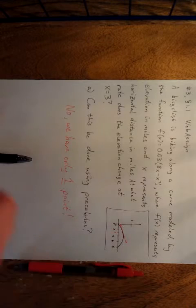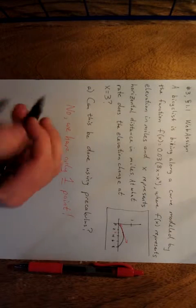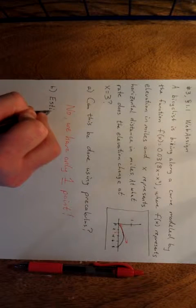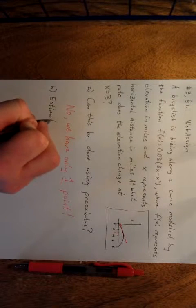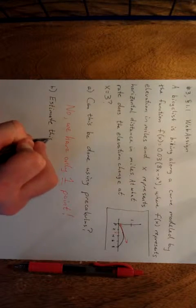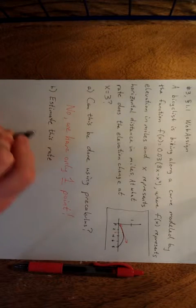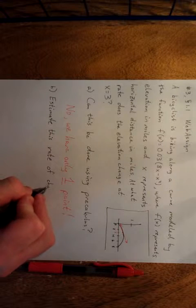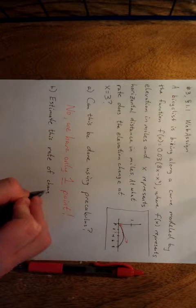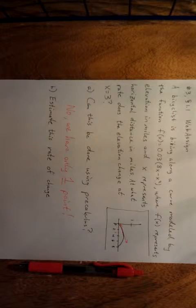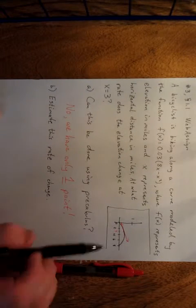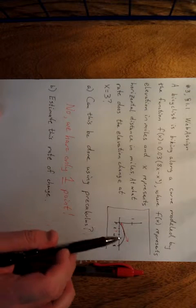However, in the second part of the question, we are asked to estimate this rate of change. This can be done using pre-calculus. According to the notes from section 1.1, this is what we refer to as a tangent line problem, since we're looking for the slope of a tangent line and we only have a single point.